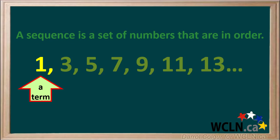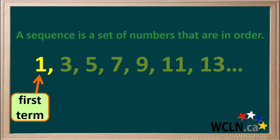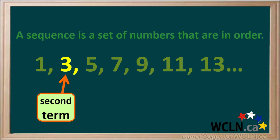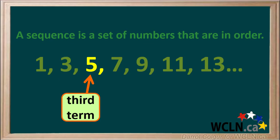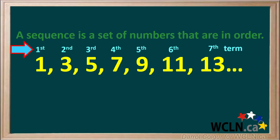Each individual item that makes up a sequence is called a term. The first number in the sequence is called the first term. The second number written is called the second term. The third number written is called the third term, and so on like this.